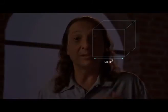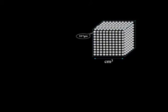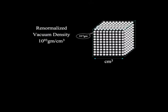Each one has a very specific mass — 10 to the minus 5 grams — and they added it all up to get a fundamental density. The result was still extremely large: 10 to the 93 grams per centimeter cube.